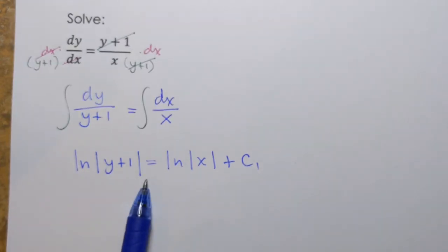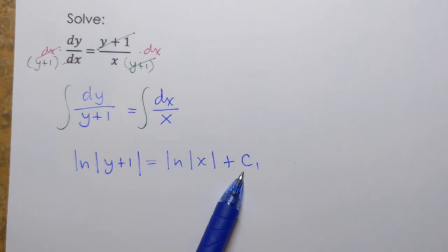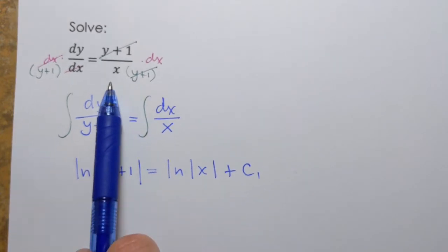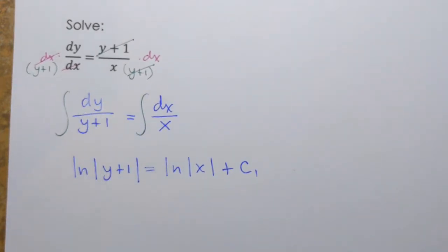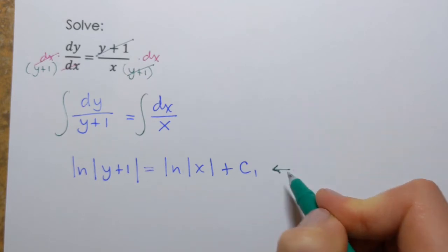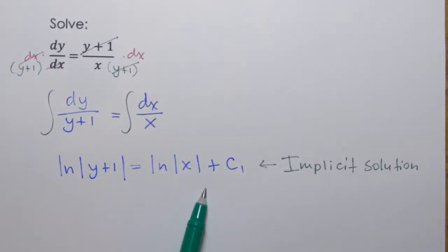And what we have here is the family of functions, family because of this arbitrary constant, family of functions in the implicit form that represent solutions to this given equation. So we're pretty much done. See how quick and easy that was. Well again I'm going to write that this is a solution in the implicit form. Implicit solution.